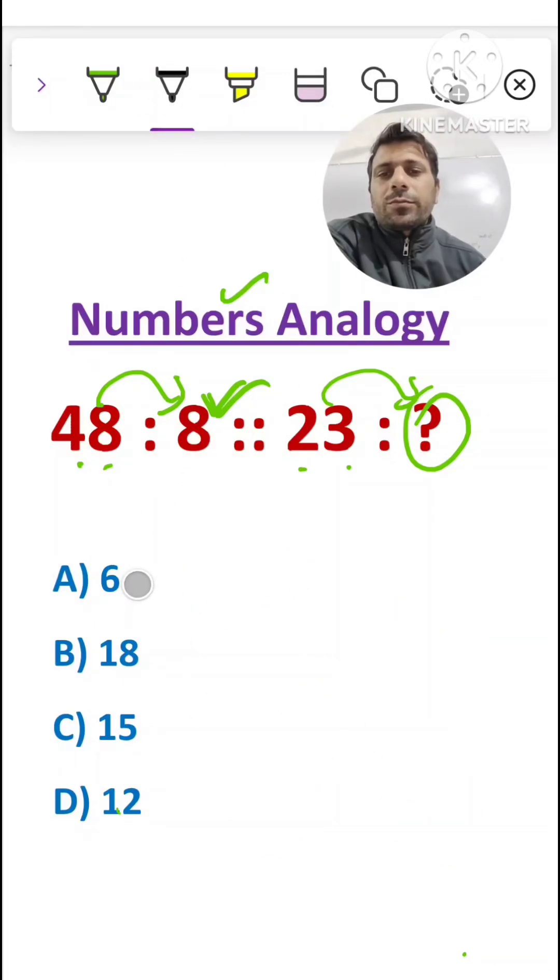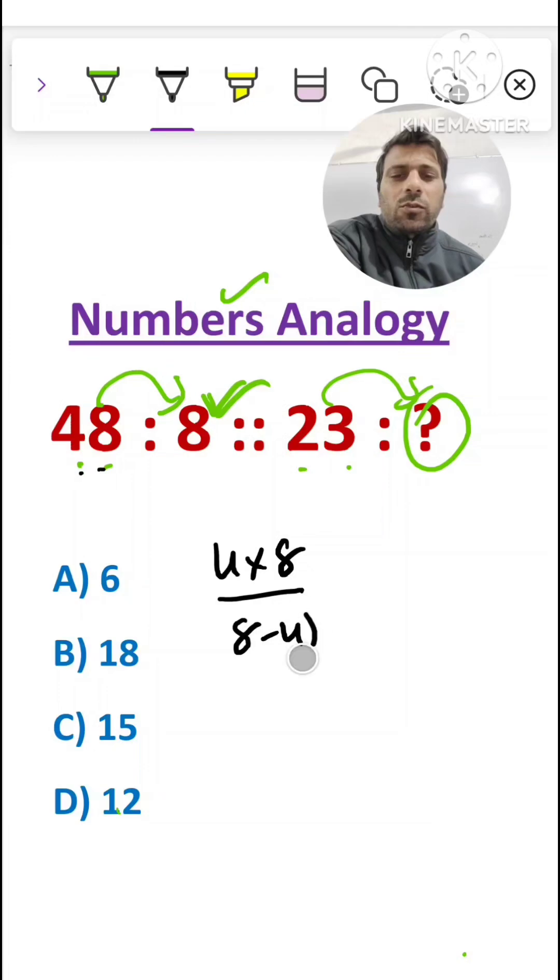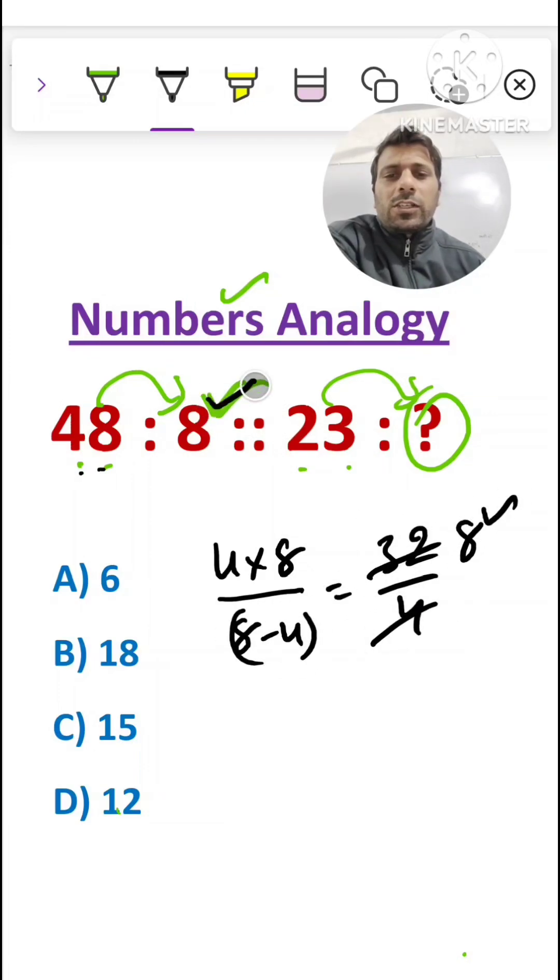Now, multiply the digits. Then we get 4 times 8, and in the denominator, take the subtraction of digits, which is 8 minus 4, which equals 32 upon 4. Cancel it out, then we get 8, which is correct.